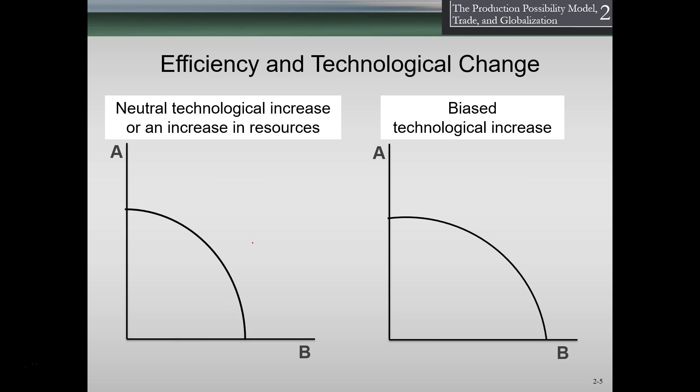Regarding efficiency and technology change — a neutral increase in technology or increase in resources shifts the frontier outward evenly. For example, if there was an increase in population giving us more human capital, and that human capital was equally suited to producing both guns and butter in the same ratio as before, then the production possibility frontier would shift outward and we could produce more of both goods evenly distributed.